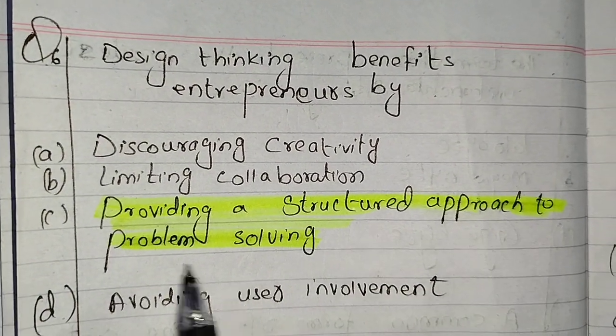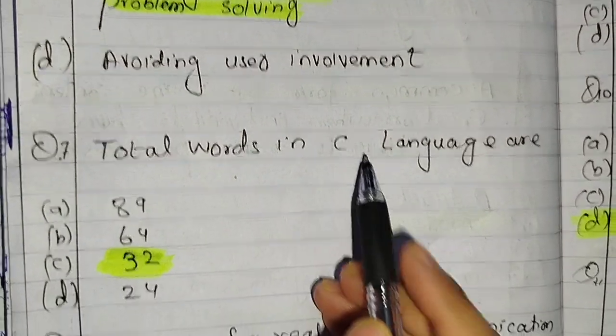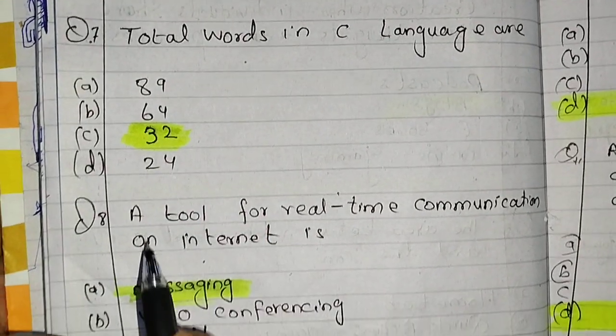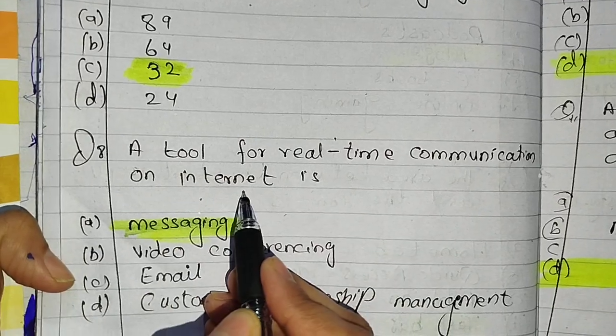Next is total words in C language or C program. Total words in C language is 32. Next MCQ is a tool of real-time communication on the internet.